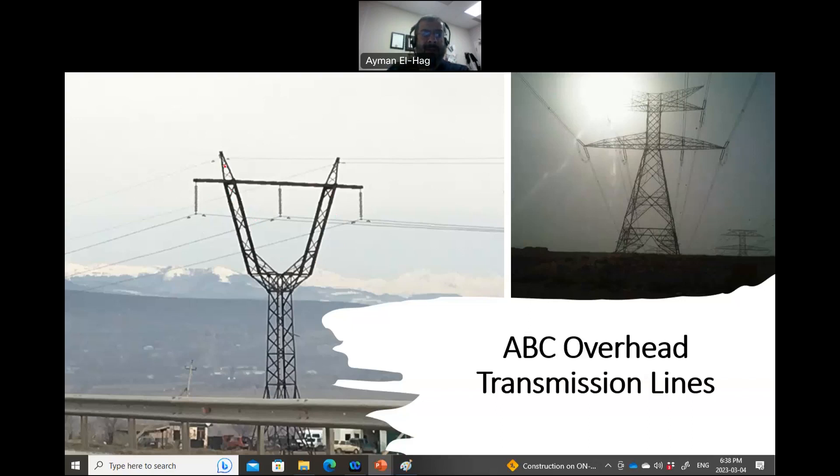First is the tower. This is the main thing in the overhead lines. And then we have the conductors, and you will see there are two different types of conductors: those conductors that carry the current, the three-phase system, and the conductors on top, which are for protection from lightning. Then we will have the insulators, which connect the conductors to the tower. And finally, there are some accessories that we will talk about as we progress.